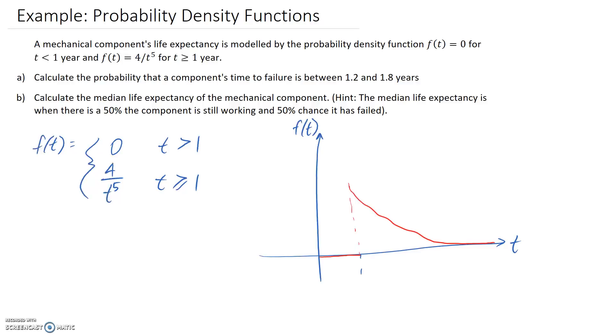If this is our probability density function, part a is asking us for the probability that our component's time to failure is between 1.2 and 1.8 years. So if we mark that in our diagram, it's going to be about say here for 1.2, and I'll go with here for 1.8. So essentially what we need to figure out is the area inside this section, because that's the probability that we're looking for.